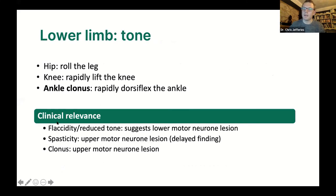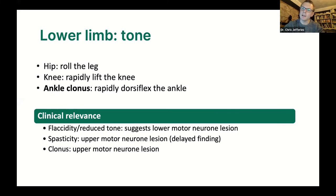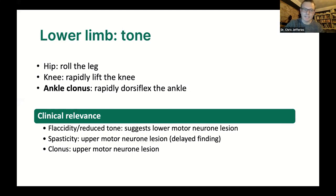For tone in the lower limb, you can roll the leg, test tone at the hip and knee, rapidly lift the knee, and also check for clonus. Clonus is a set of involuntary rhythmic muscular contractions and relaxations associated with upper motor neuron problems — more than five beats is considered abnormal. To test clonus, with the patient relaxed, rapidly dorsiflex the ankle with the foot partially averted, stretching the gastrocnemius muscle. Clonus is a sign more suggestive of an upper motor neuron problem.